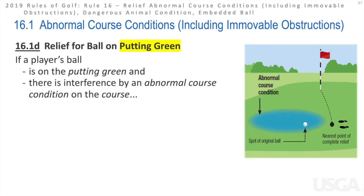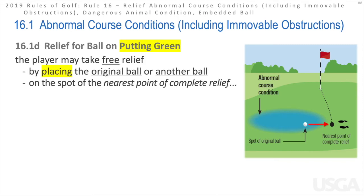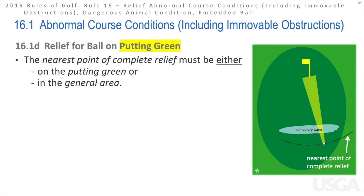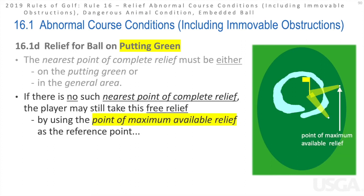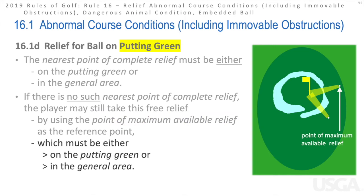When a player's ball is on the putting green and they have interference from a condition, they can take free relief by placing the original ball or a substitute on the spot of the nearest point of complete relief. That nearest point must either be on the putting green or in the general area — so the golfer might have to place the ball in the fringe. If there is no point of complete relief, they must use the maximum available relief reference point, which can also be on the putting green or in the general area.